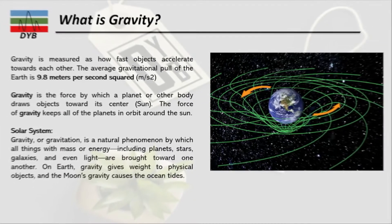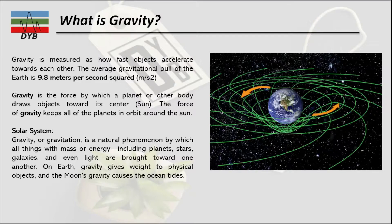So what is gravity? Gravity is measured as how fast an object accelerates toward another. The average gravitational pull of the Earth is 9.8 meters per second squared. Gravity is the force by which a planet or body draws objects toward its center. In our solar system, the Sun is in the middle and it's attracting all the planets into orbit around it.